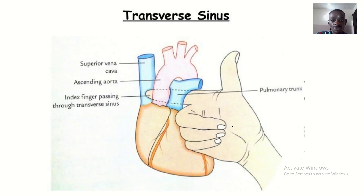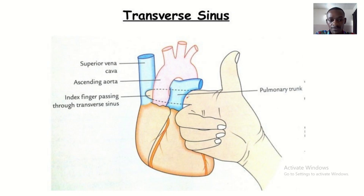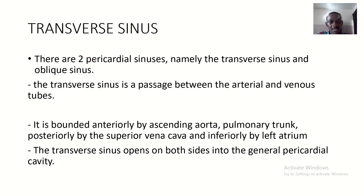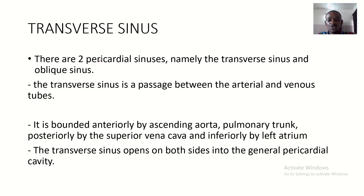So this is the transverse sinus on the heart. When you hold the heart and push your hand in, where your hand is entering is the transverse sinus. There are two pericardial sinuses: the transverse sinus and the oblique sinus. The transverse sinus is a passage between the arterial and the venous tubes — the great vessels.